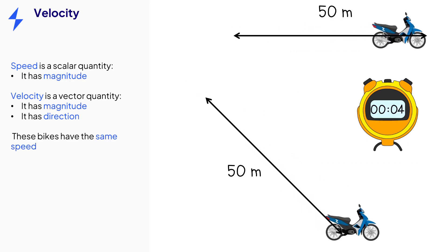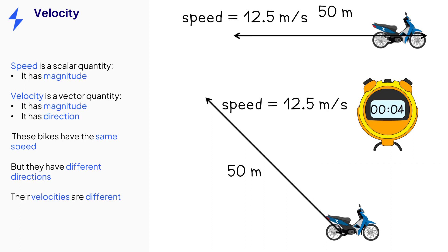50 divided by 4 is 12.5 meters per second. They travel in different directions, however, so their velocities are not equal.